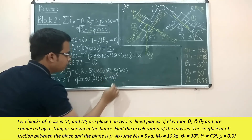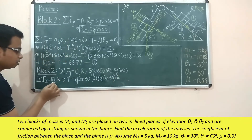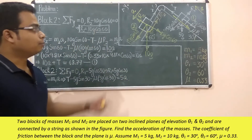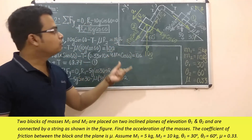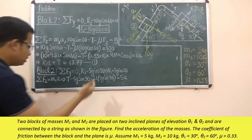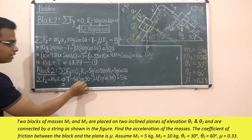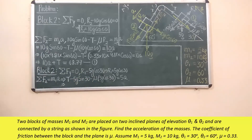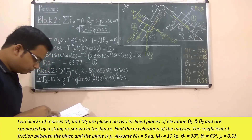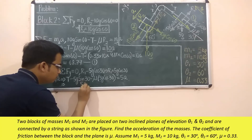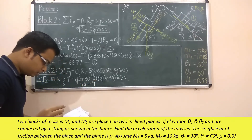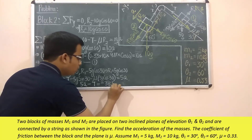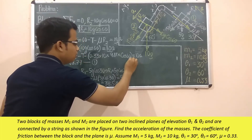Substituting R1 = 5g cos30 and putting in all values — g = 9.81, μ = 0.33, m1 = 5 kg — the equation simplifies to: 5a − T = −38.54. This is equation number two.